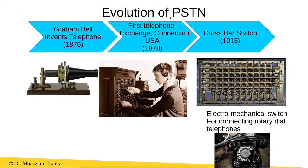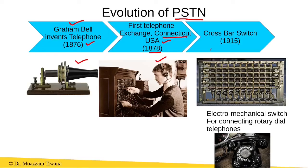The evolution of the PSTN network started when Graham Bell invented the telephone in 1876. Soon afterwards, in 1878, the first telephone exchange was established in Connecticut, USA. In these exchanges, there were human operators who used manual switchboards in order to connect different telephones with one another and establish voice calls between them.